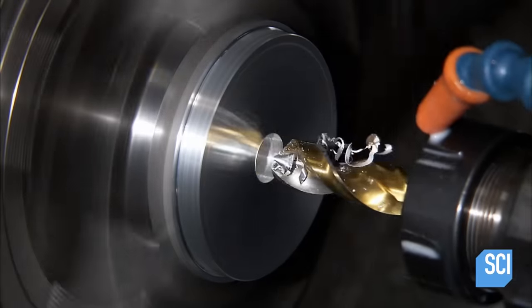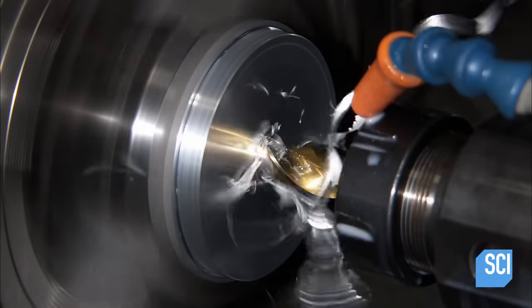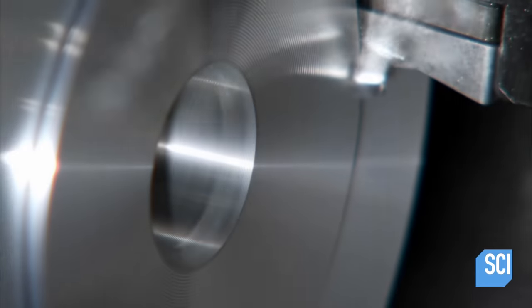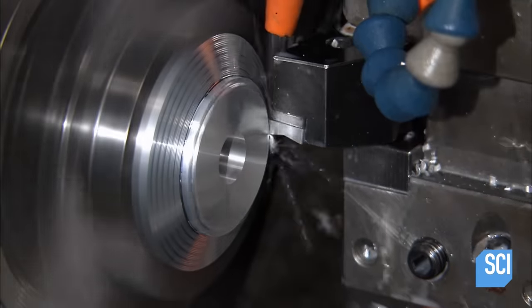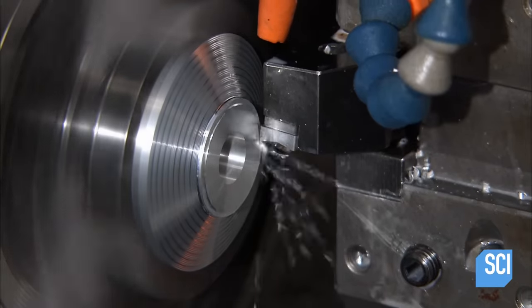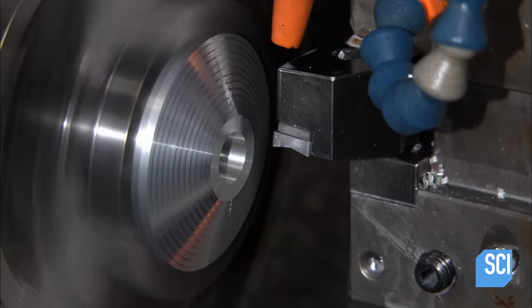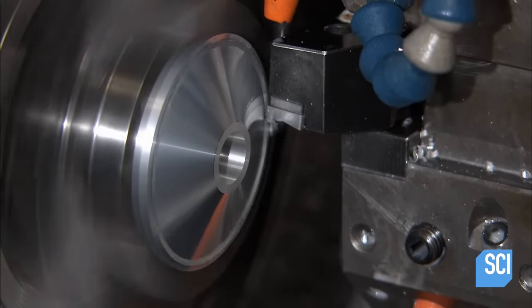Computerized tools transform this small aluminum disc into the counterweight's main component. The counterweight balances the tonearm to keep the stylus in the groove of an LP. They slope the surface and cut holes for attachments and for installing the part.